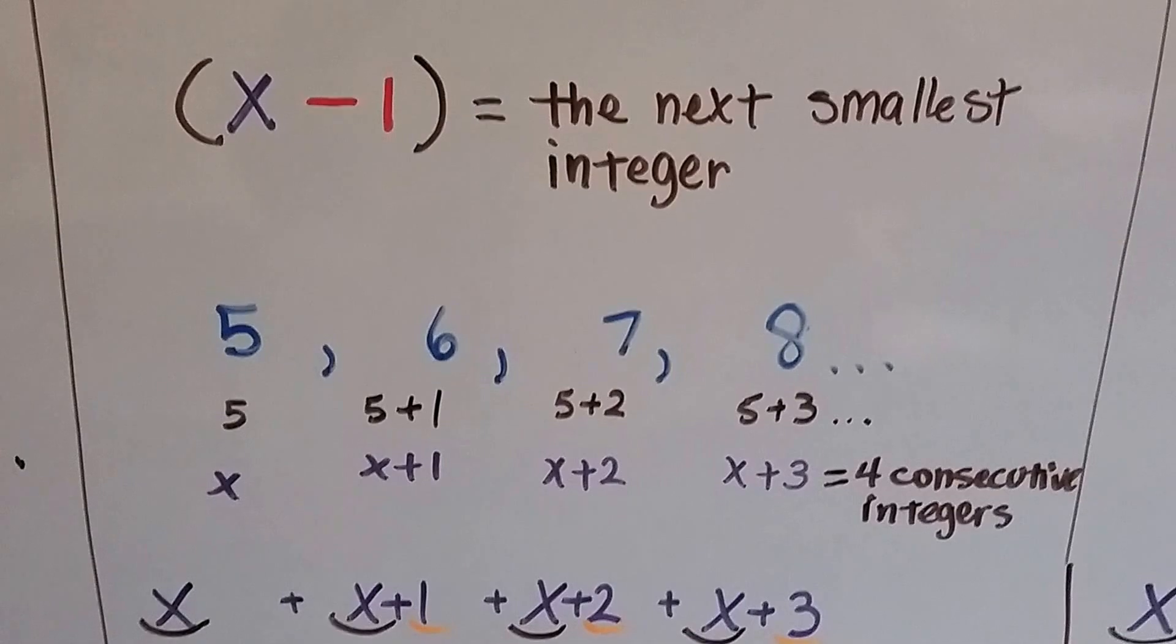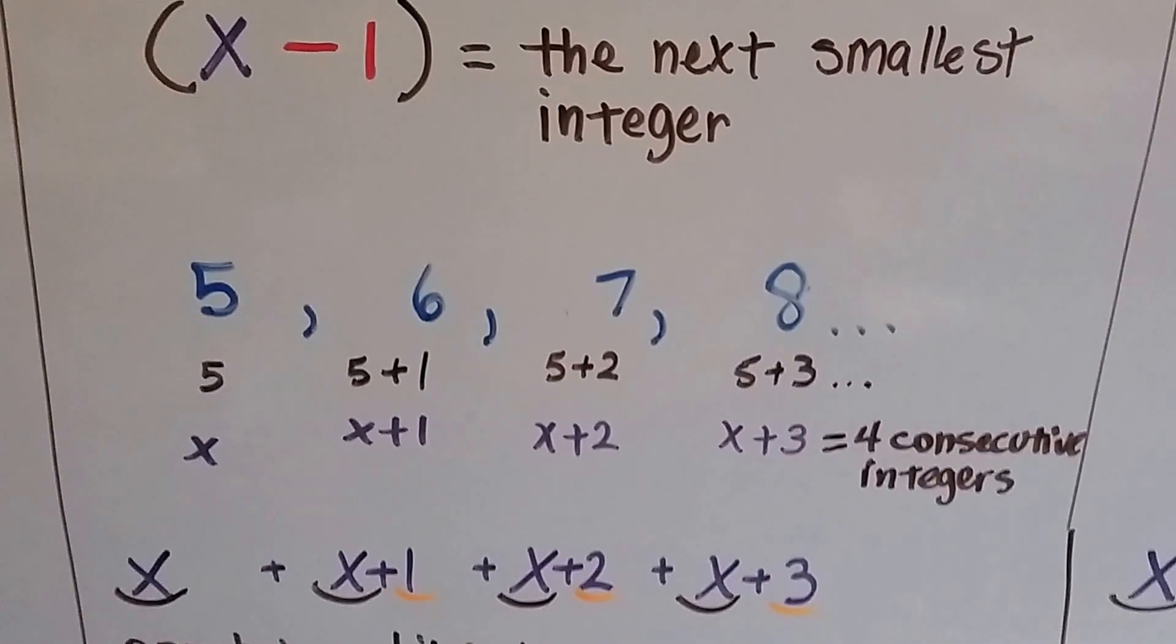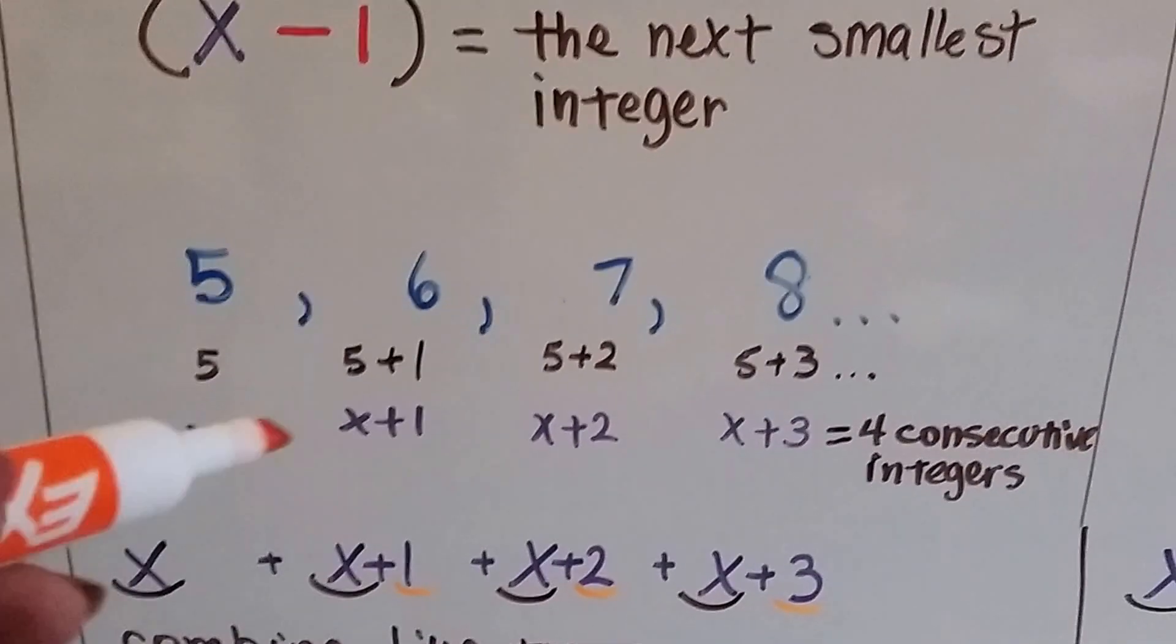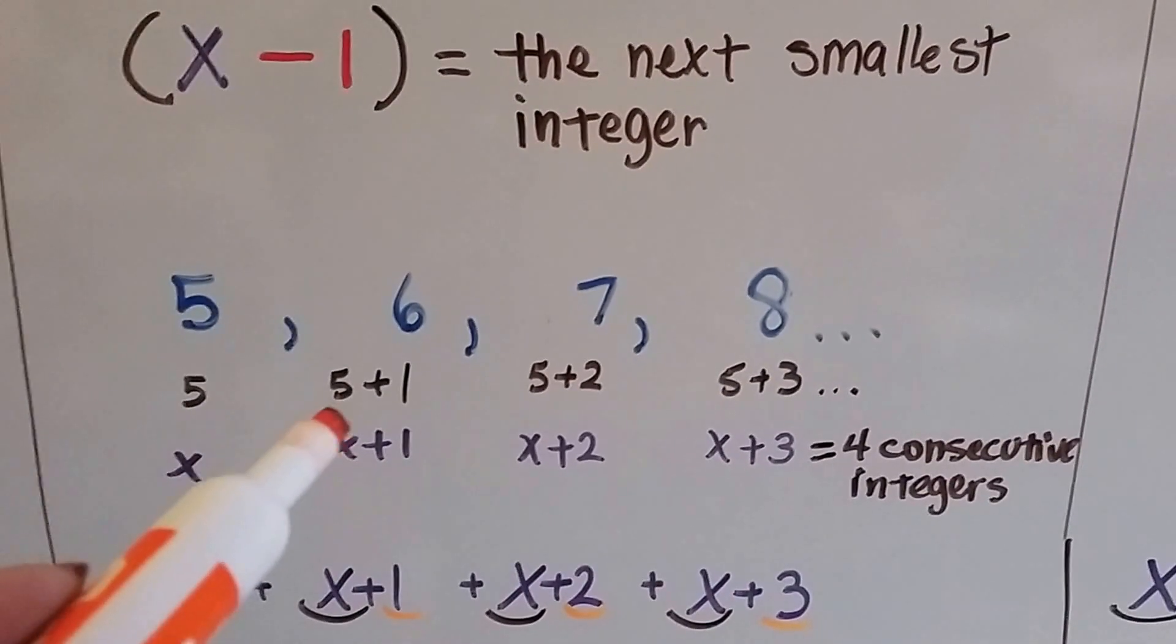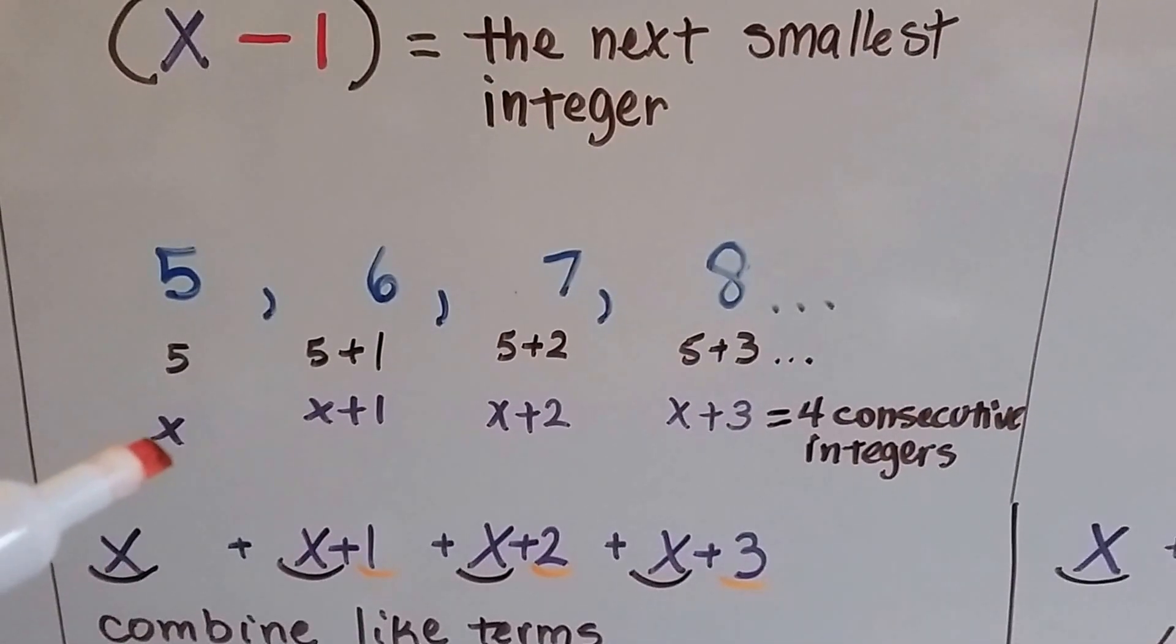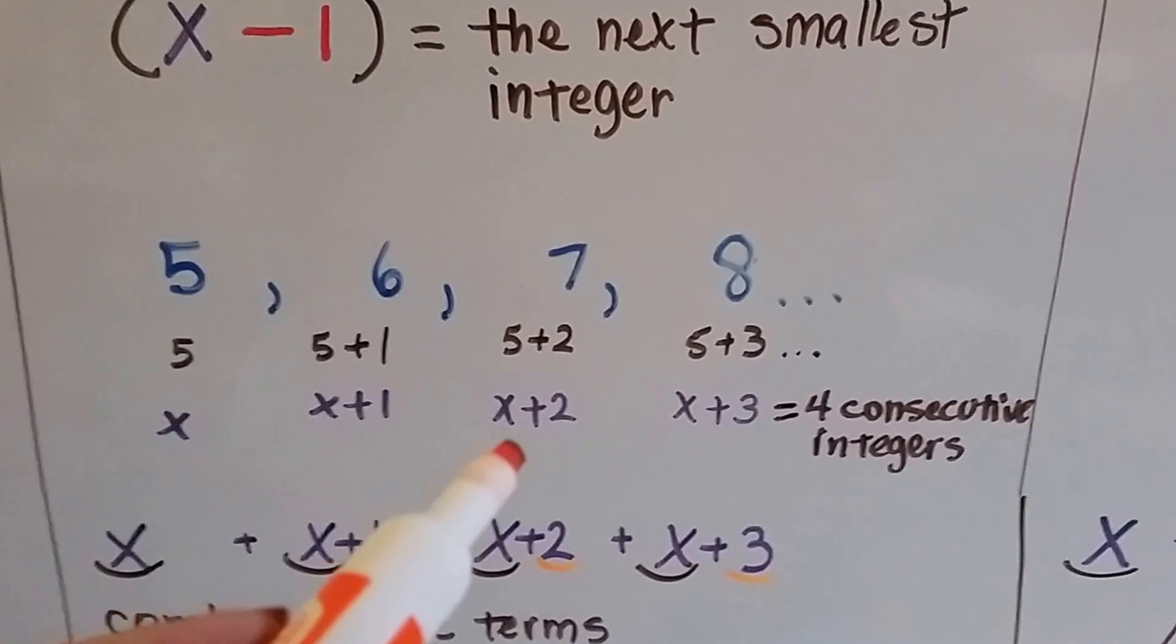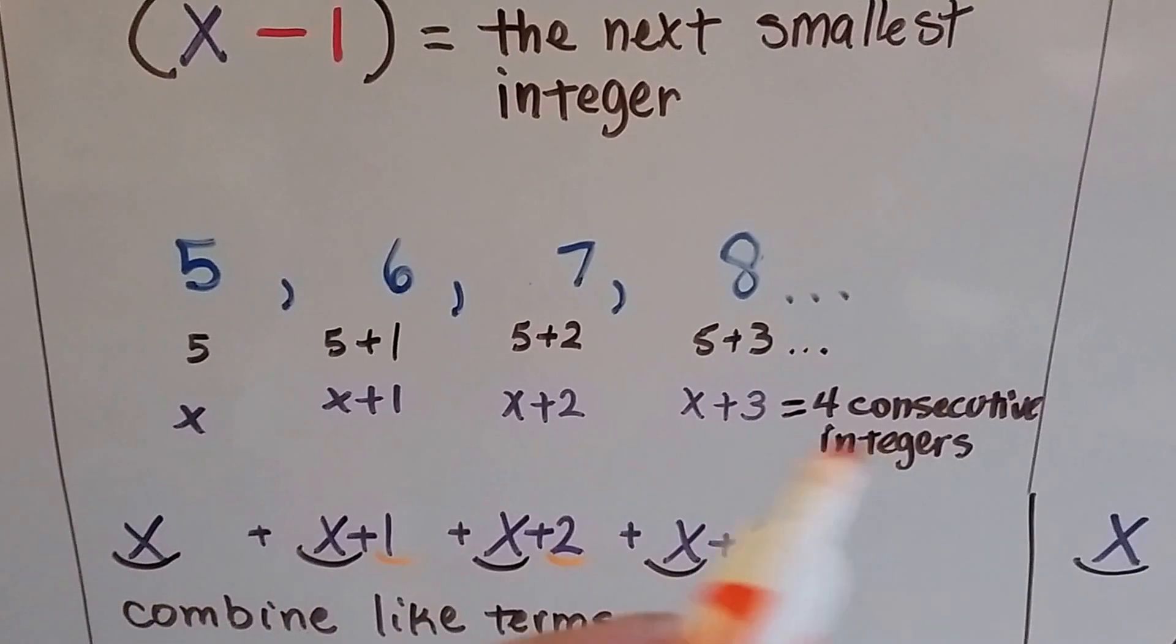If we have 5, 6, 7, and 8, those are consecutive integers, all in order in sequence. And the 5 is our base number that we're going to start with. So if we do 5, and then 5 plus 1, that's going to get us 6, 5 plus 2 is going to get us the 7, and 5 plus 3 is going to get us the 8. And if we assign x as this integer, we have x, then x plus 1, x plus 2, x plus 3, and that's 4 consecutive integers.